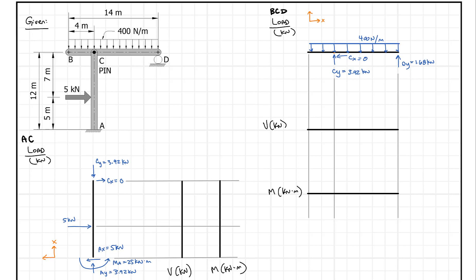Once we set the axes, we draw the shear and moment diagrams. For shear on member AC, Ax goes to the left at 5 kilonewtons. We start at 0, come up to 5, go straight across, and the 5 kilonewtons brings us straight back down. I'll label this 5 kilonewtons, mark the positive and negative sides, shade it in, and that's our shear diagram for AC.